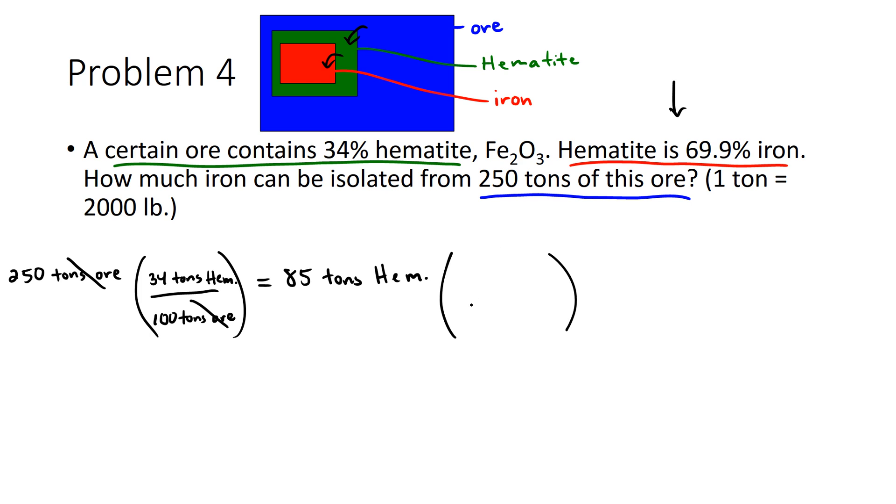If hematite is 69.9% iron, we know that for every 100 tons of hematite we have 69.9 tons of iron.